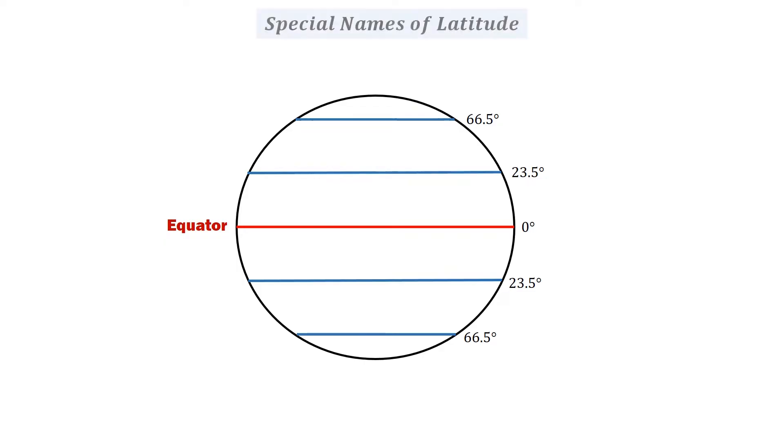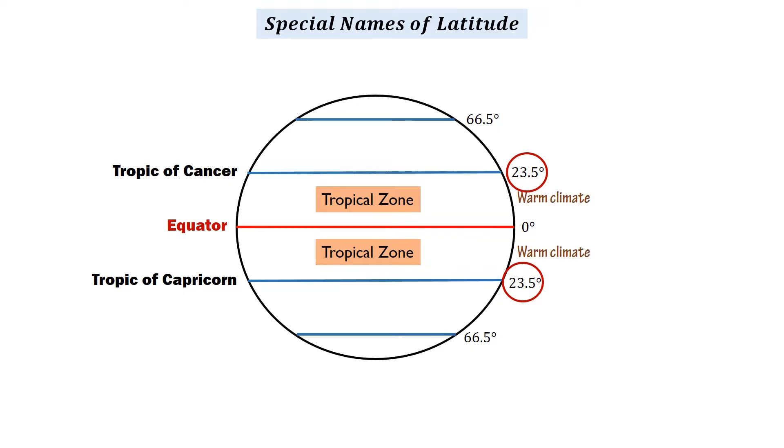Latitudes have special names. At 23.5 degrees north, the Tropic of Cancer is located, while at 23.5 degrees south is where the Tropic of Capricorn can be found. These zones are tropical zones. The countries that are located in these zones experience a warm climate.